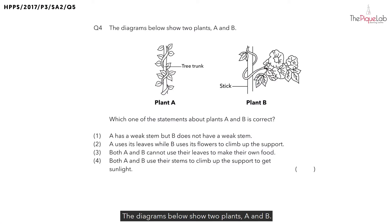Question 4. The diagrams below show two plants A and B. The question asks which one of the statements about plants A and B is correct? Let's take a look at option 1. A has a weak stem but B does not have a weak stem.